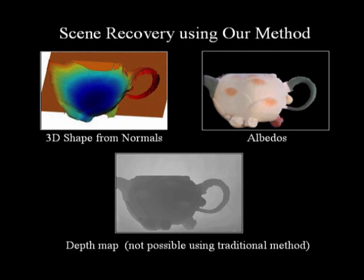In addition to surface normals and albedos, our method also yields the depth map of the scene, which is not possible using traditional photometric stereo.